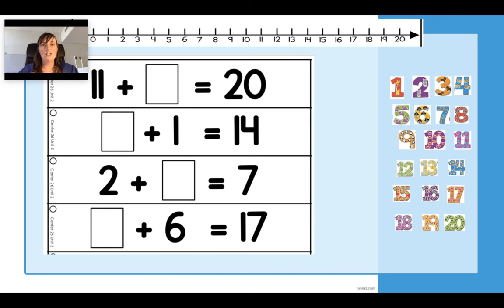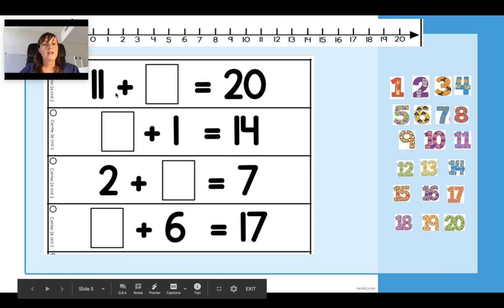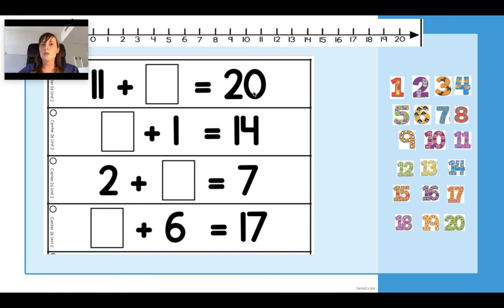So today we're going to have a look at some more missing number calculations. Now this time we're not looking at number bonds to 10 or 20 - the answers as you can see are all different. So here we've got 11 plus something equals 20. Now I could use my fingers to count on from 11 and get to 20, I could use my number line starting at 11, move to 20. I could do lots of different methods - I could draw, I could use counters or pennies or pasta at home. That is entirely up to you. As I keep saying, we all learn in different ways, so it's up to you the way that you learn best. There's no right or wrong method - it's only the answer we want.